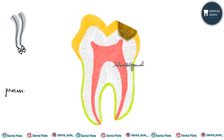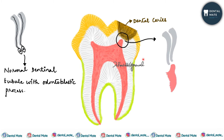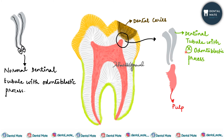This is a normal dentinal tubule with an odontoblastic process. When there is an injury to the tooth dentine — due to caries or any stimuli — the dentinal tubules are opened or sufficiently irritated. The contents within them coagulate and die, leaving a dentinal tubule without any odontoblastic process.